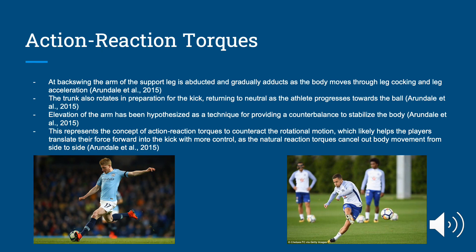Torques are also involved in action-reaction torques. This occurs when two torques go in opposite directions and cancel each other out, leaving a zero change in momentum. This occurs when the backswing arm and support leg are abducted and gradually adduct as the body moves through leg cocking and leg acceleration. At the same time, the trunk is also rotating and returns to neutral as the athlete progresses towards the ball. The top half of the body rotates one way and the bottom half the other; then both halves twist the opposite direction and come together. These canceling torques are thought to help athletes direct all their force forward into the kick and provide a counterbalance to stabilize the body.